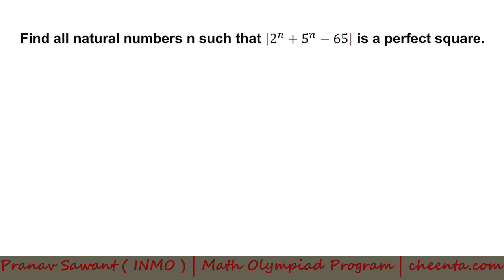We need to find all natural numbers n such that the absolute value of 2 raised to the power n plus 5 raised to the power n minus 65 is a perfect square. This is an equation given to us and the expression needs to be a perfect square. So how exactly are we supposed to work with this? Well, obviously it's a number theory problem, and most likely we're going to need some ideas of congruences modulo.